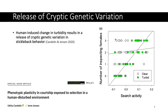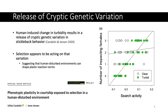However, when the environment became more turbid, the variation along the x-axis increased, such that some males increased their search activity in response to turbidity. What's interesting is that selection may be acting on this newly expressed variation, because there's now a correlation between search activity of males in turbid environments and the number of inspecting females. So females are potentially selecting on males with higher search activity, but only in turbid environments when that phenotypic variation is present to begin with.